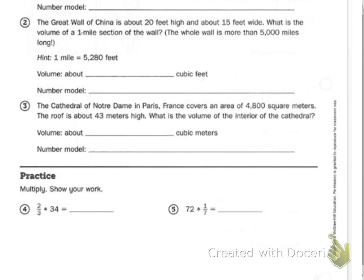So you're given the height, the width, and then this one mile is your length. So my hint to you is use this: volume equals length times width times height.